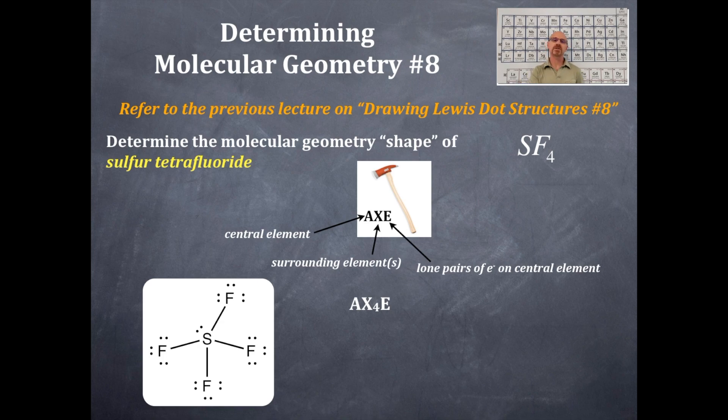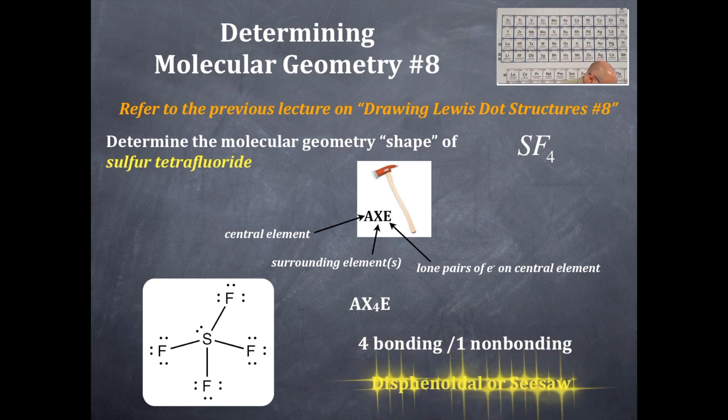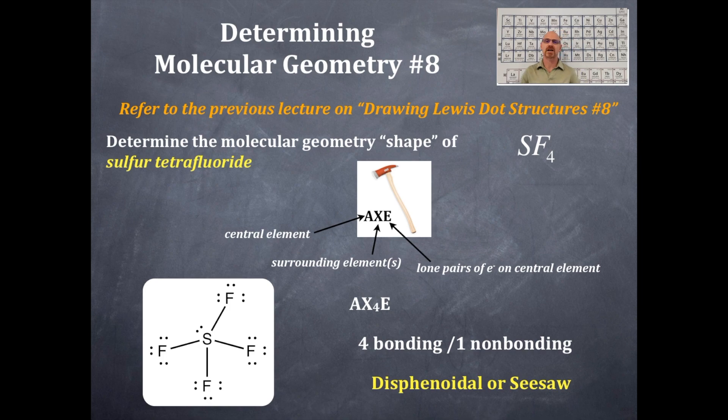So you should associate AX₄E with a name of a geometric shape, or you should understand that there are four bonding domains and one non-bonding domain in this. And then from that, you're going to get the name of this here. And that is disphenoidal or seesaw.